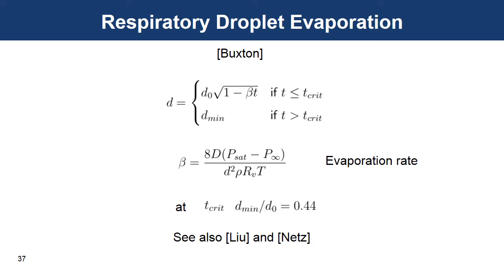As a droplet evaporates, its diameter decreases from an initial value of d0 to a minimum value of dmin. There's some disagreement in the literature about whether this minimum diameter represents a solid or possibly a liquid with a solid crust around the outside. The reference at the bottom by Lue gives the crust description. In any case, Buxton gives formulas describing the diameter as a function of time. It says that d is equal to d0 times the square root of 1 minus beta t, where beta is the evaporation rate. Here d is the molecular diffusivity of water vapor. p sat is the saturation pressure of water vapor. And p infinity is the ambient pressure of the water vapor.